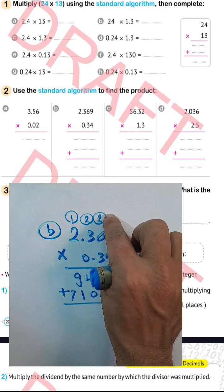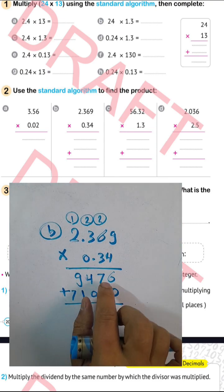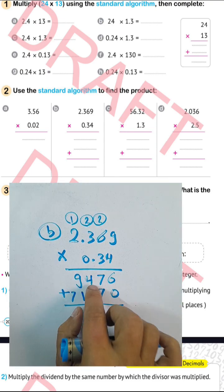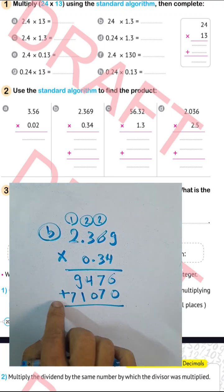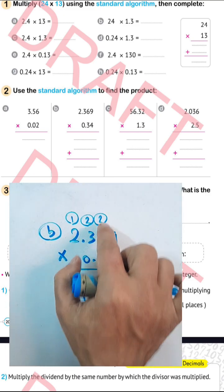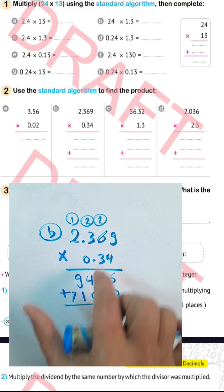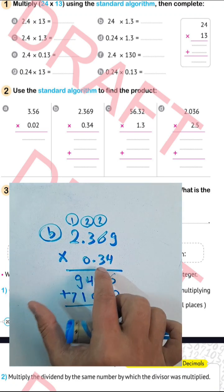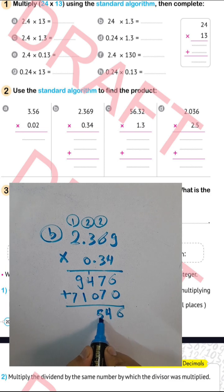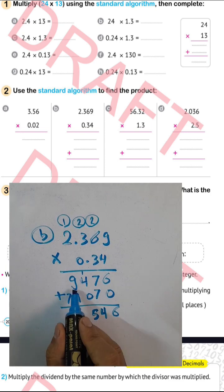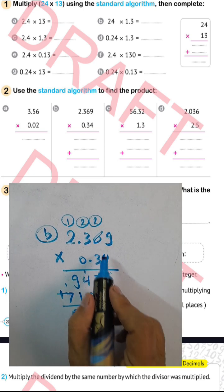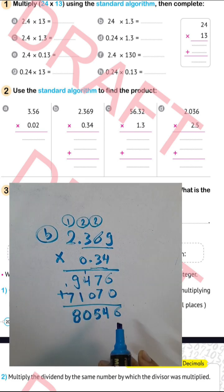Continuing the addition: 7 plus 7 equals 14, write 4 carry 1; 4 plus 1 equals 5; 5 plus 0 equals 5; 9 plus 1 equals 10, write 0 carry 1; 7 plus 1 equals 8. Then placing the decimal point after 3 places and 2 places means after 5 places total, giving 0.80454.